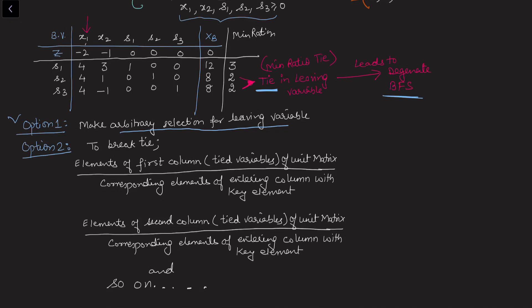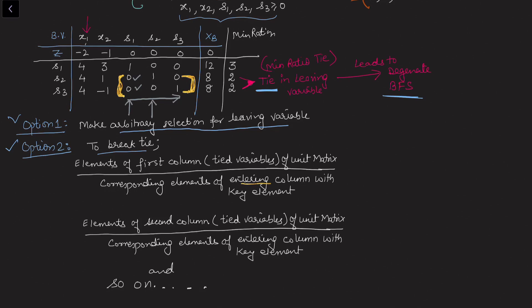The first option is arbitrary selection — we can choose either s2 or s3 as the leaving variable without affecting the final optimal solution. The second option is a formal tie-breaking rule: take the elements of each column of the initial unit matrix for the tied rows, divided by the corresponding elements of the entering column (the pivot column). We must identify the initial basis — here s1, s2, s3 were the initial basic variables — and focus on the two tied rows.